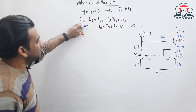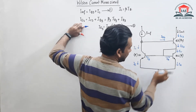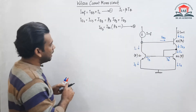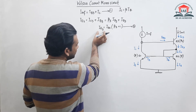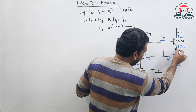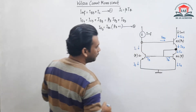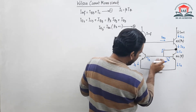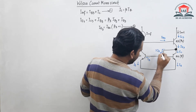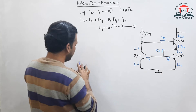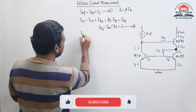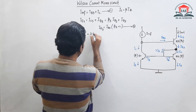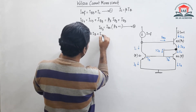We can also represent Ie3 another way. Applying KCL at the collector node of Q1 and Q2, Ie3 equals Ic plus Ib. Applying KCL at another node, we find that Ie3 equals 2·Ib plus Ic.